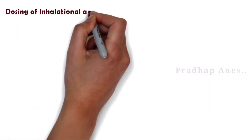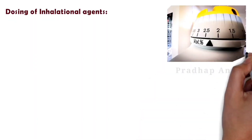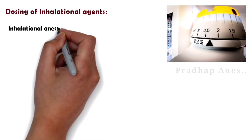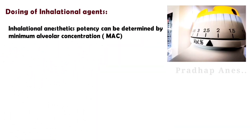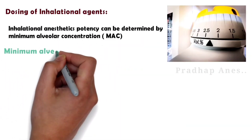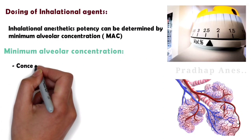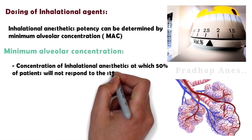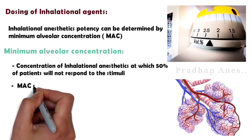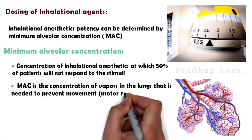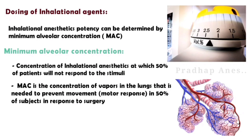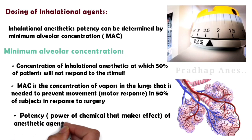Dosing of inhalational agents: the potency of inhalational anesthetics can be determined by minimum alveolar concentration, or MAC. MAC is the concentration of vapor in the lungs needed to prevent movement — a motor response — in 50% of subjects in response to surgical stimuli. MAC denotes the potency of the anesthetic agent. MAC is inversely proportional to potency.